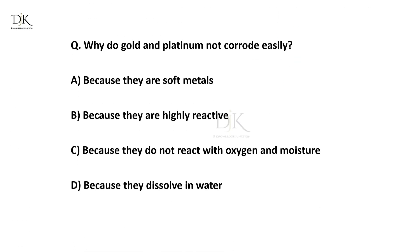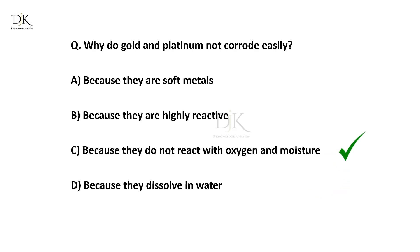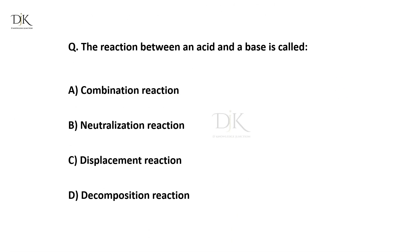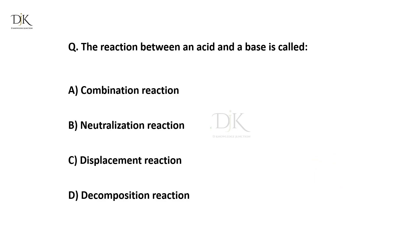Why do gold and platinum not corrode easily? The right answer is because they do not react with oxygen and moisture. The reaction between an acid and a base is called a neutralization reaction.